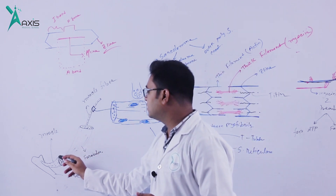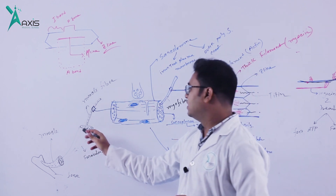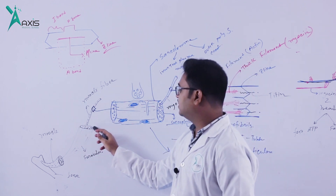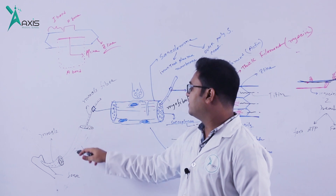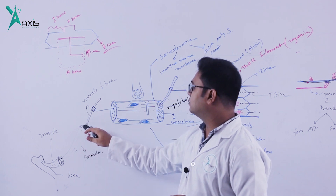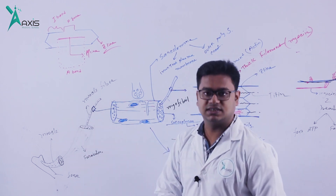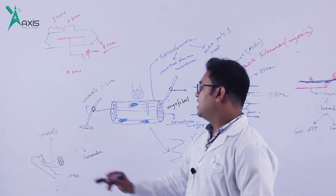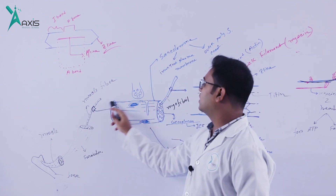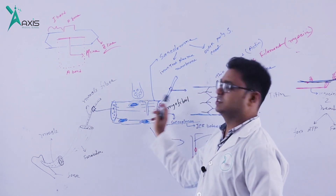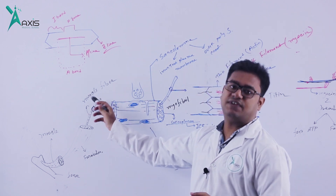This muscle fasciculus — if you borrow it and look at it closely, you can see it. This muscle fasciculus is a smaller part within the muscle.